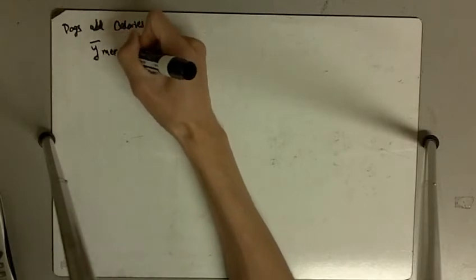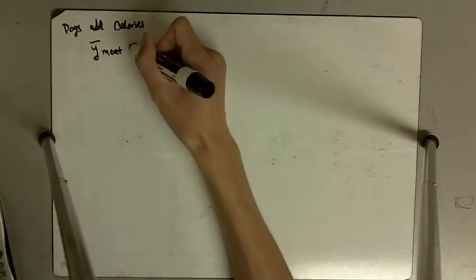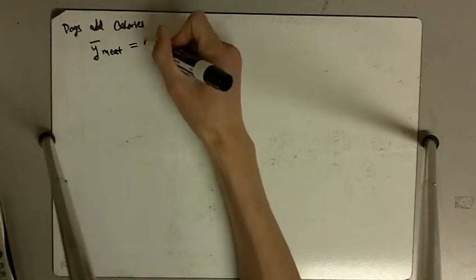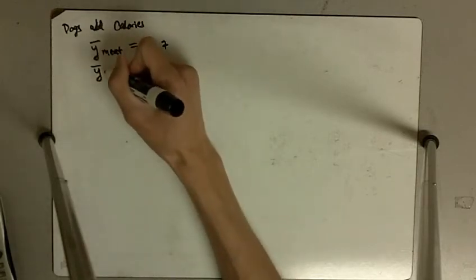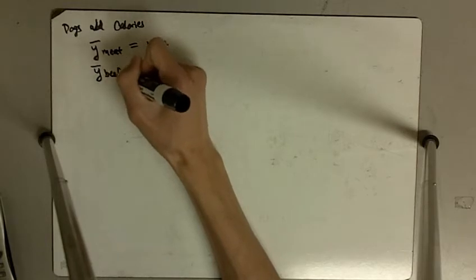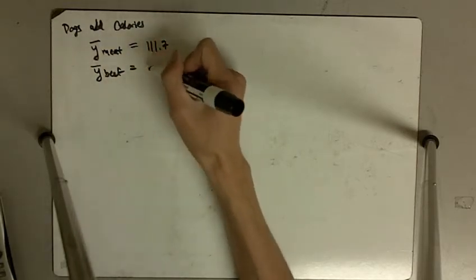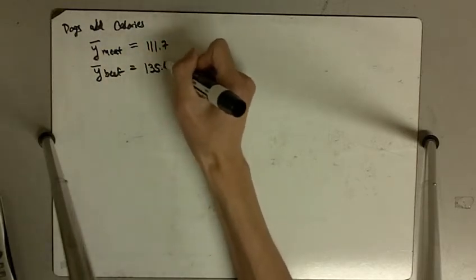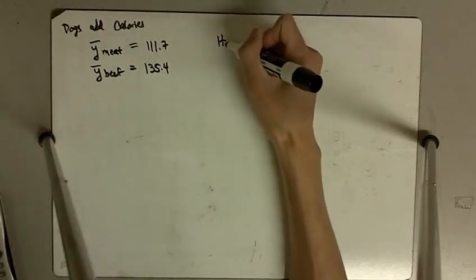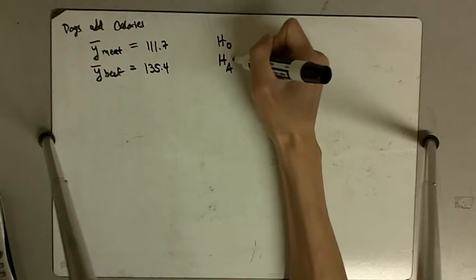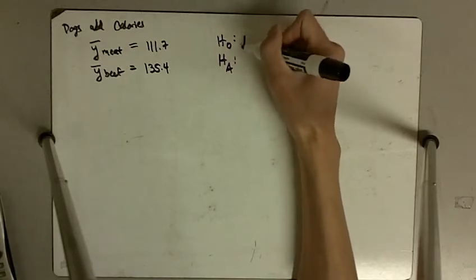So we have the sample mean for the meat hot dogs, or basically group one, was 111.7 calories. And the sample mean for the beef hot dogs was 135.4 calories.